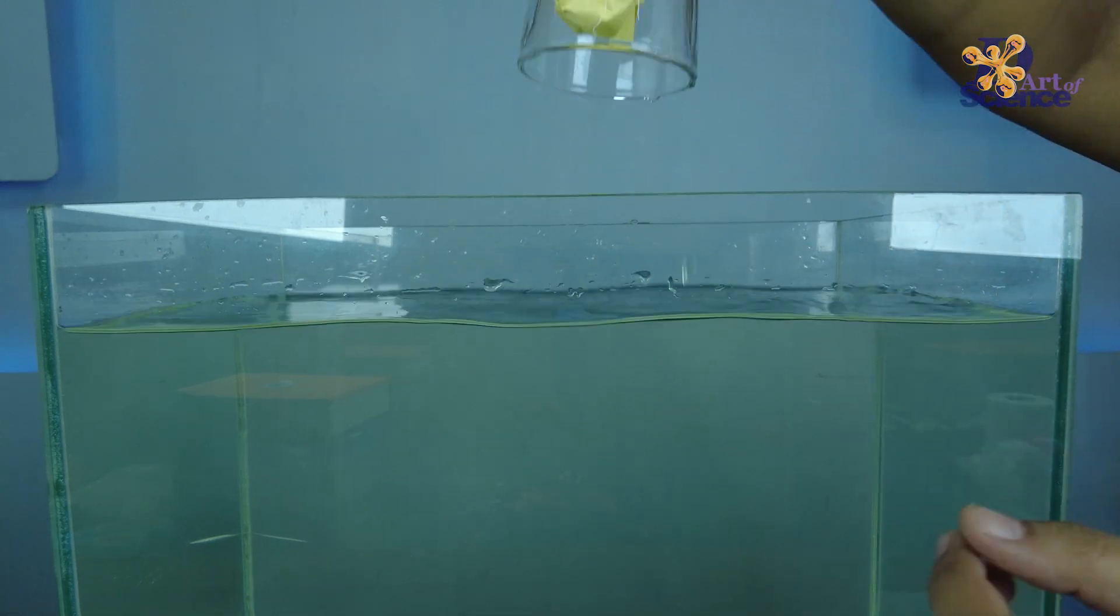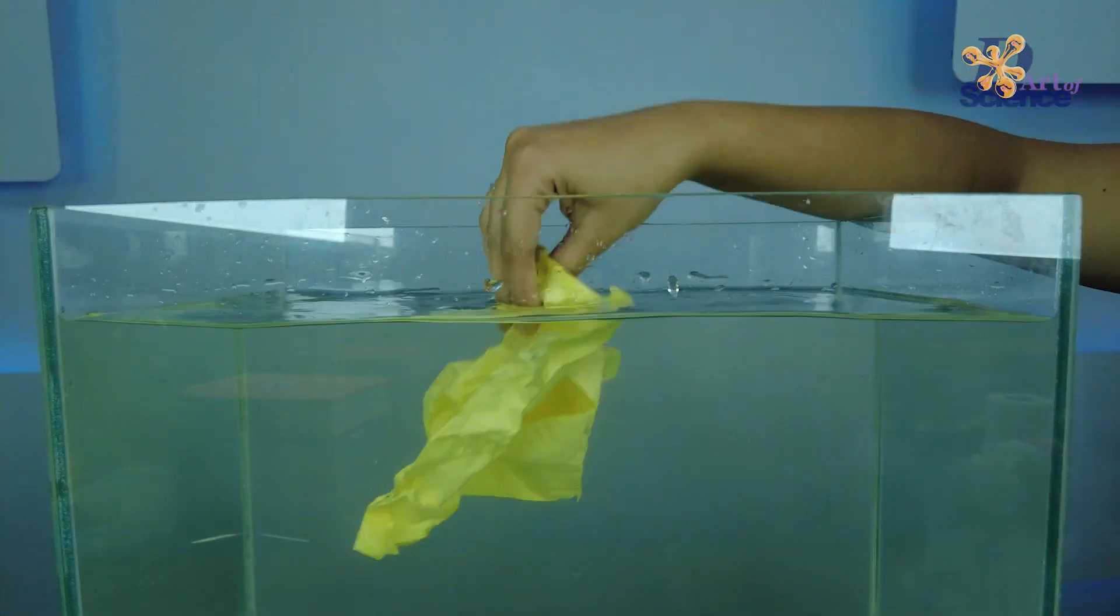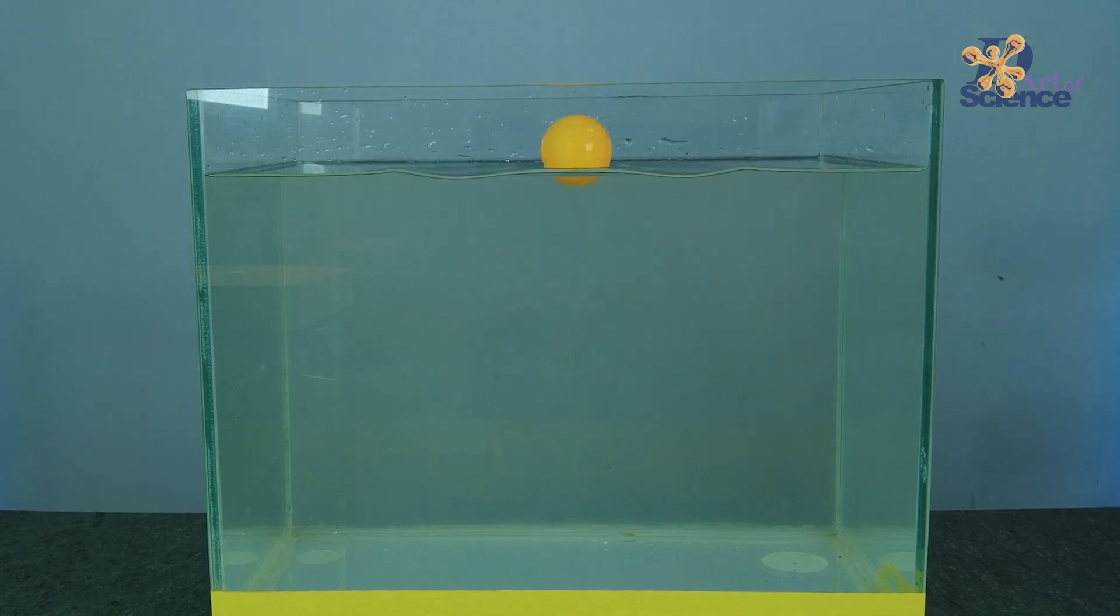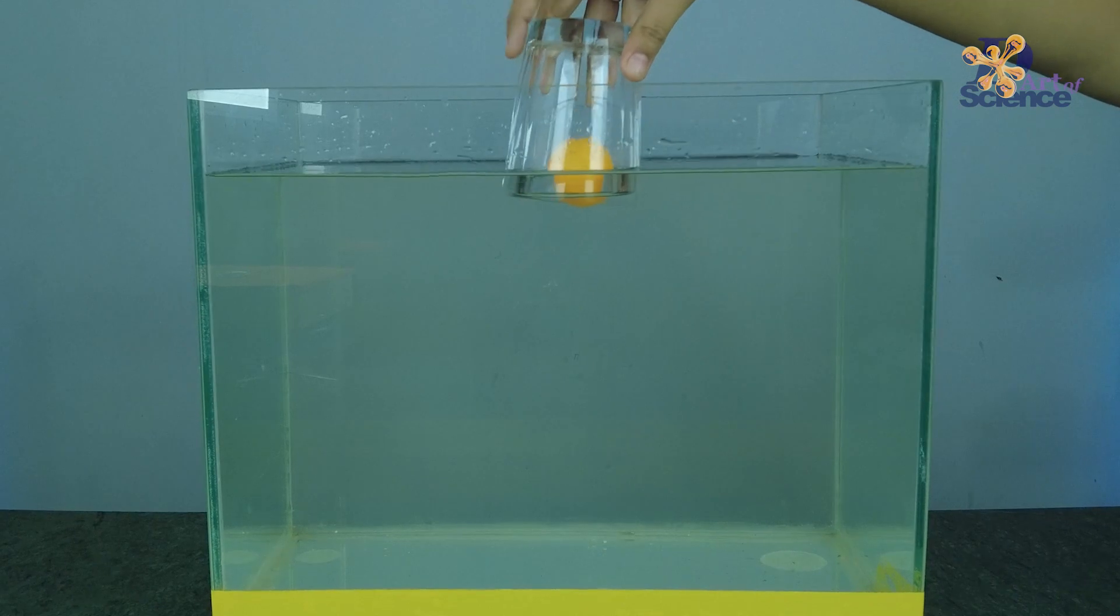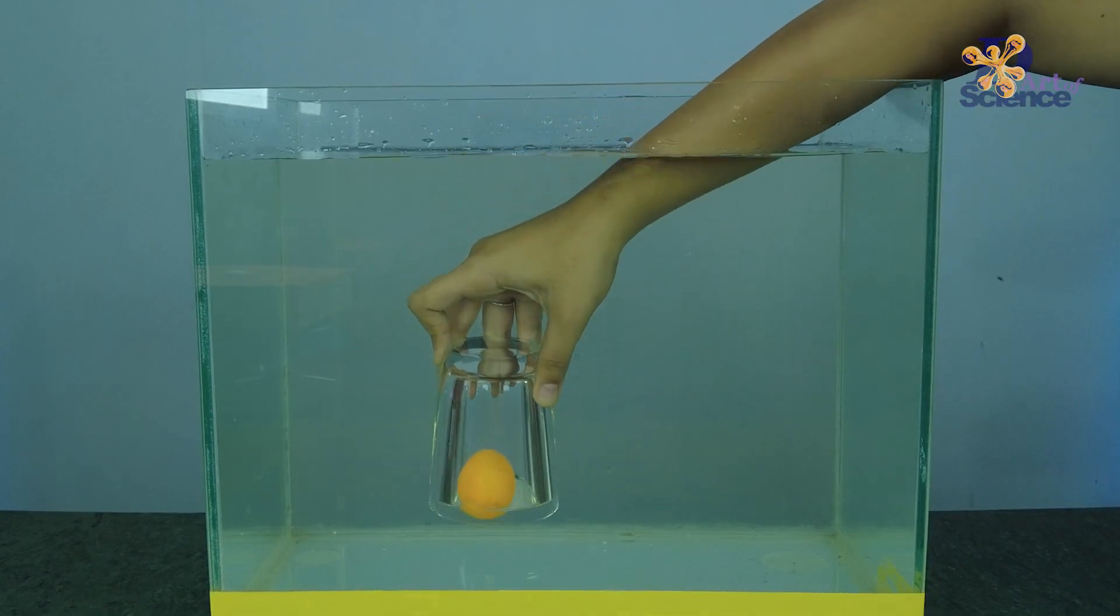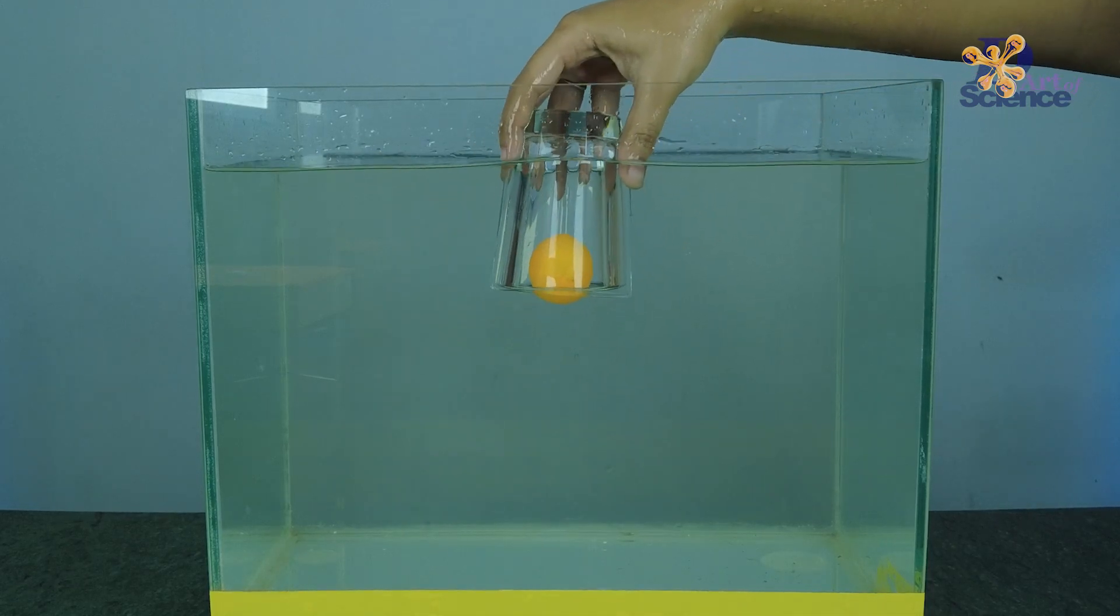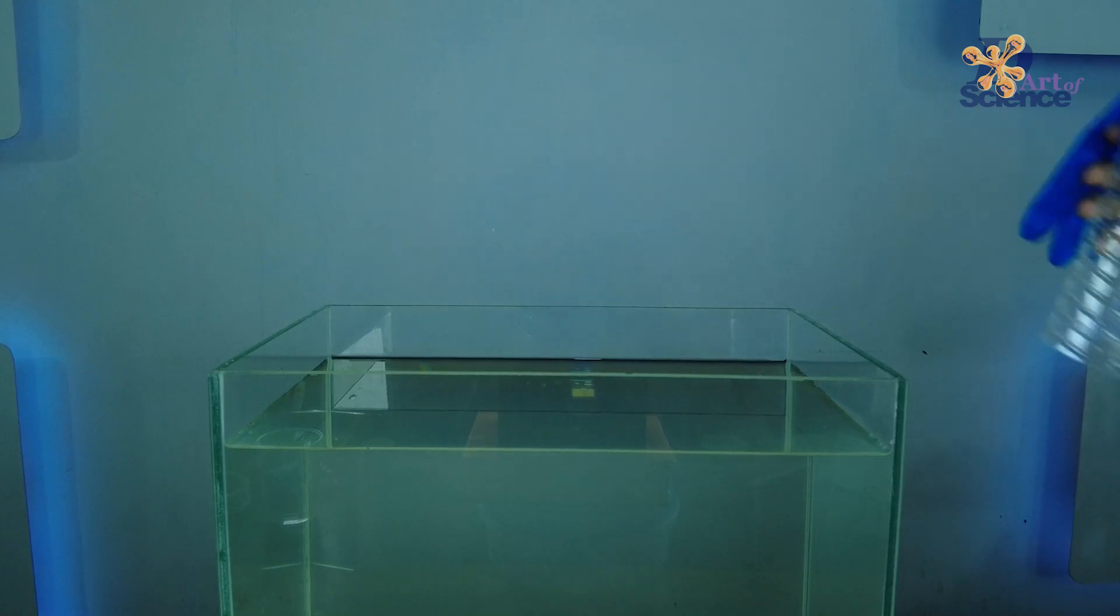Here's another experiment you can try. Place a ping pong ball in the water and then put the glass over it. Push the glass till the bottom of the container and you'll notice that the ball is pushed down with the glass. The water level increases because of displacement and the ball remains dry.